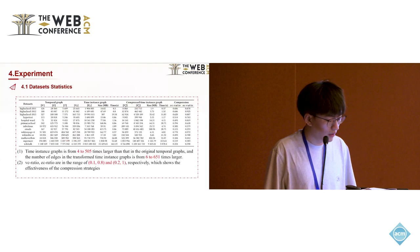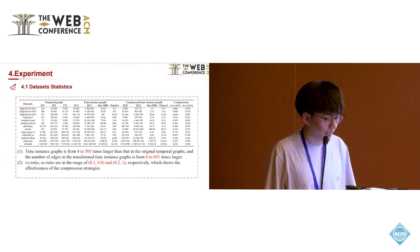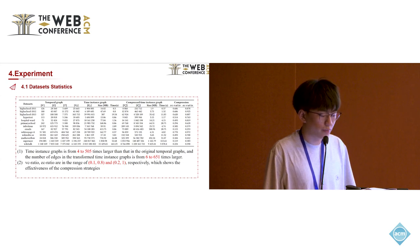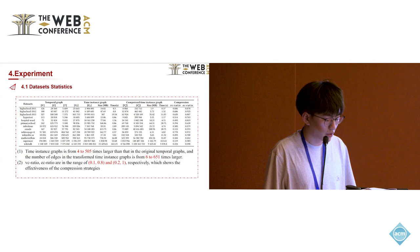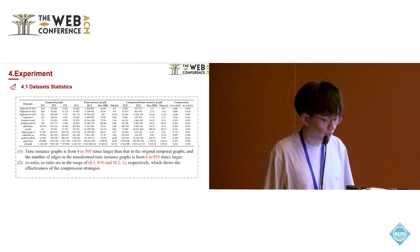Part 4. We use 13 datasets in our experiments. The table shows the number of vertices and edges in the temporal graph, the time instance graph, and the compressed time instance graph, with VC ratio and EC ratio representing vertex and edge compression respectively. We found that the time instance graph is 4 to 5 times larger in vertices than the original temporal graph, and edges are 6 to 651 times larger. The VC ratio and EC ratio are in the range of 0.1 to 0.8 and 0.2 to 1 respectively, demonstrating the effectiveness of the compression strategy.